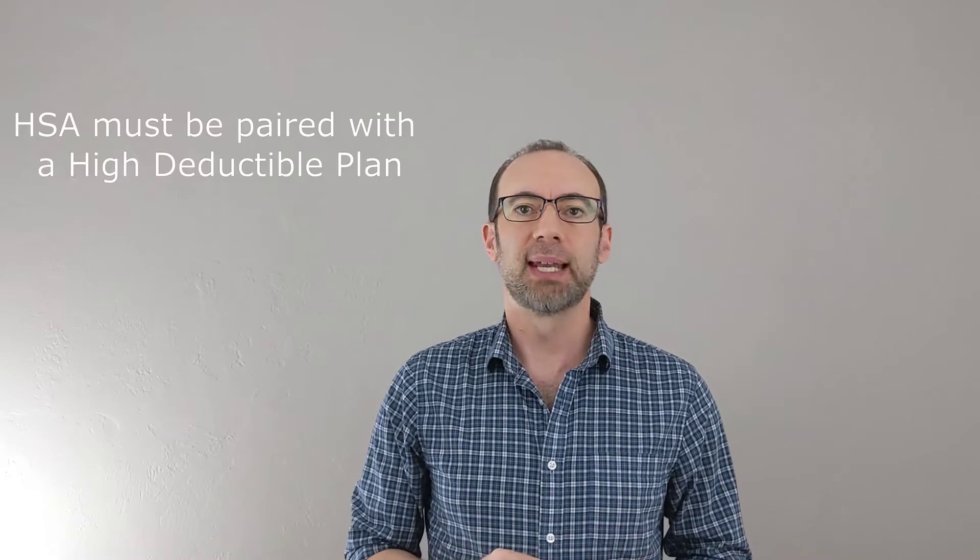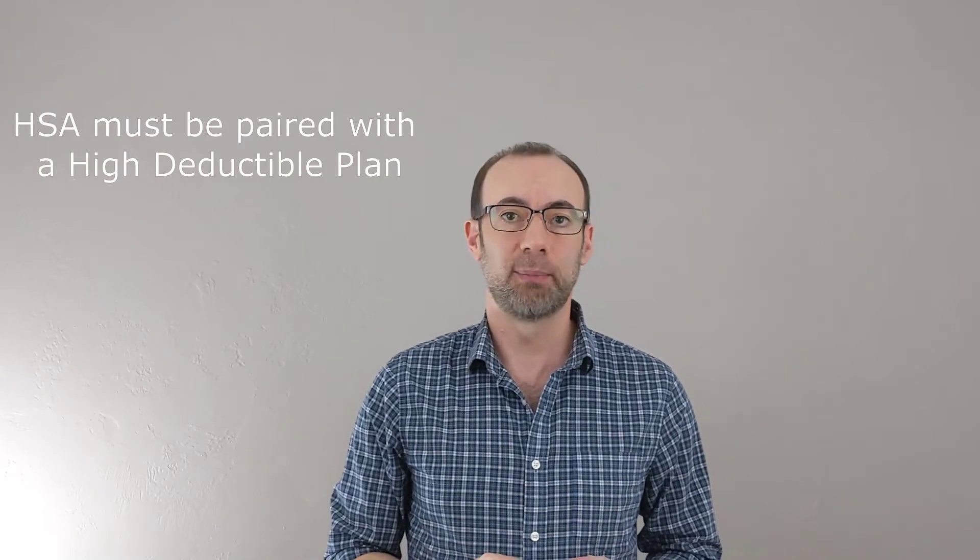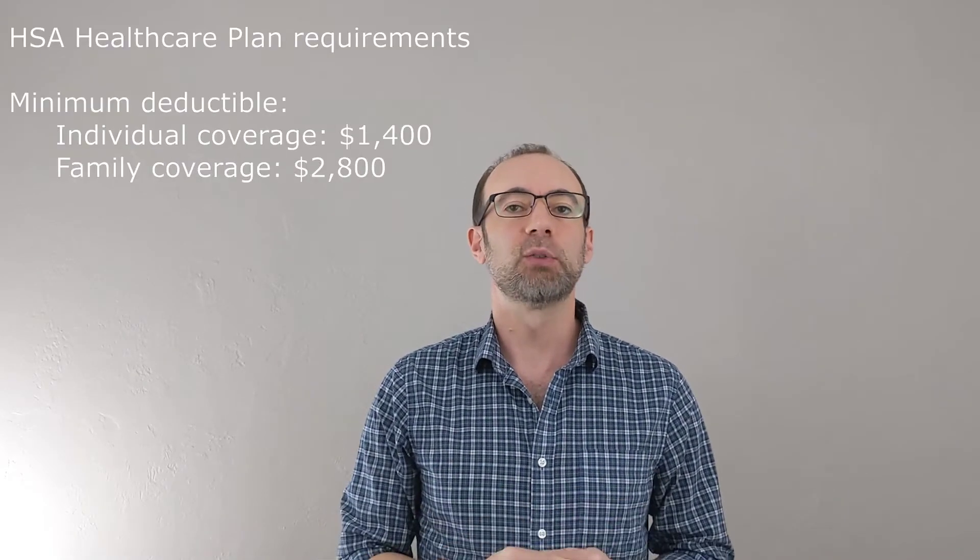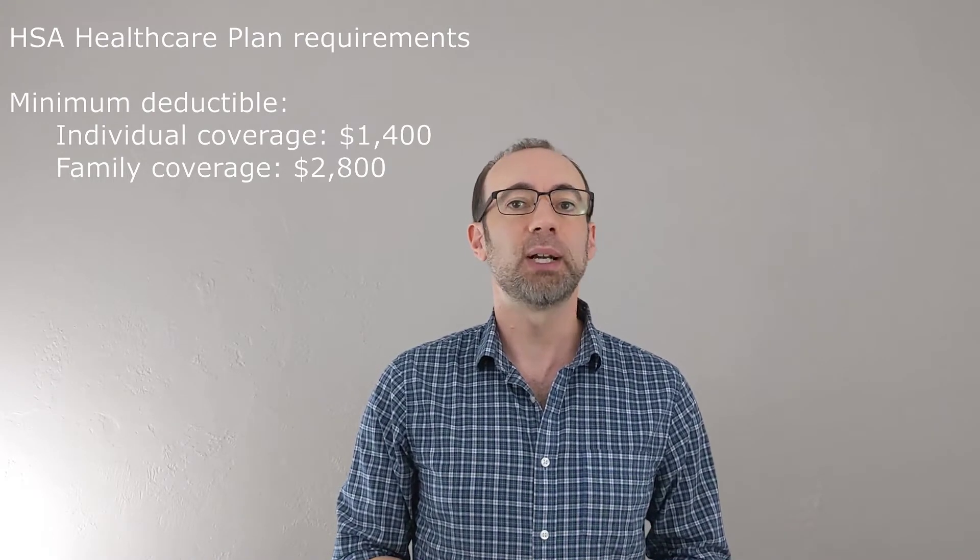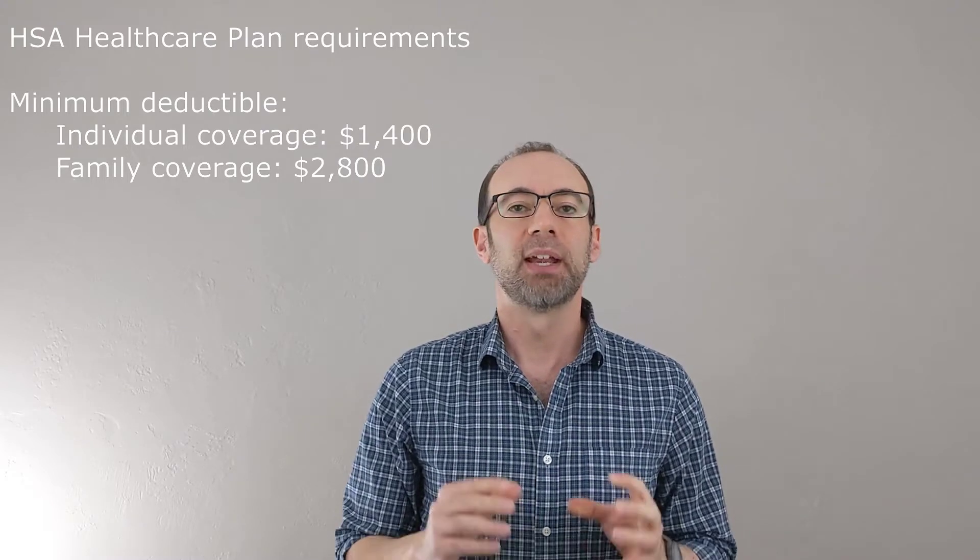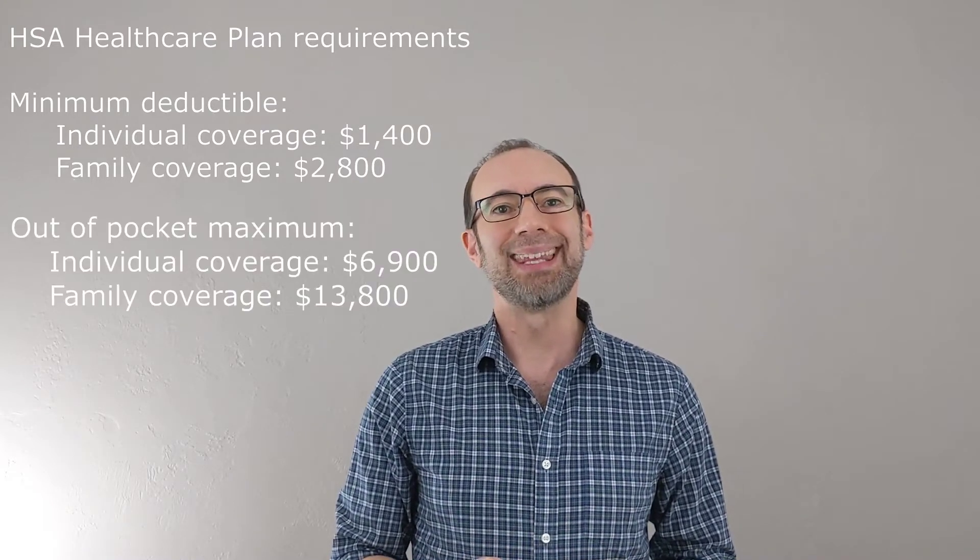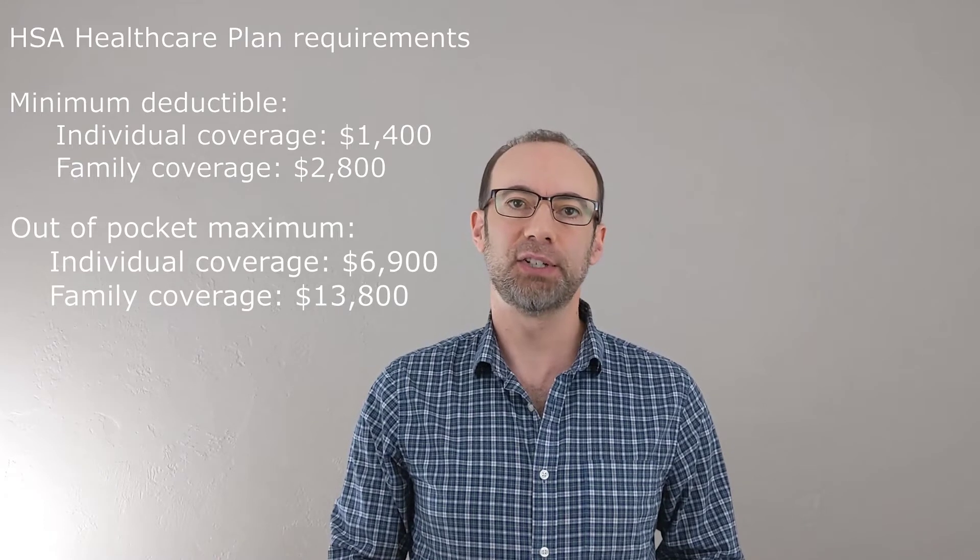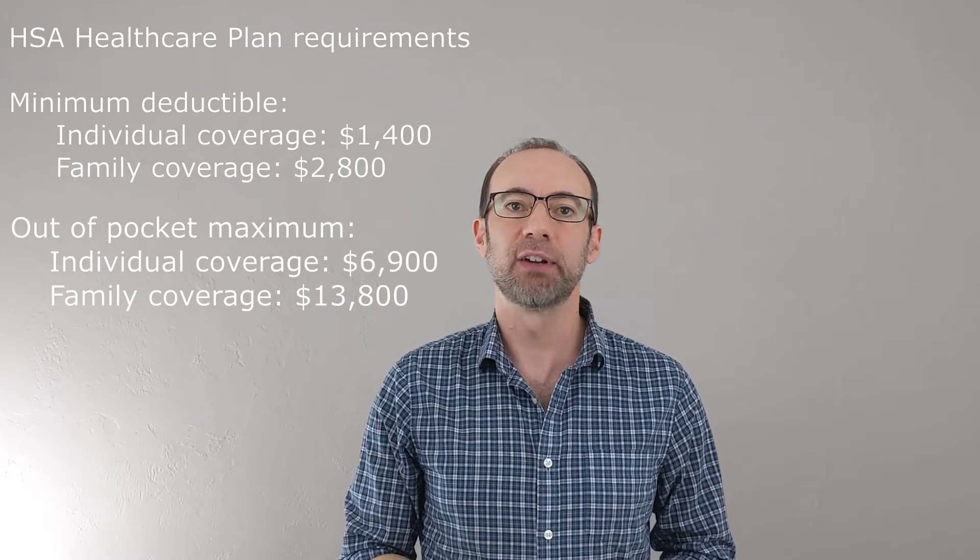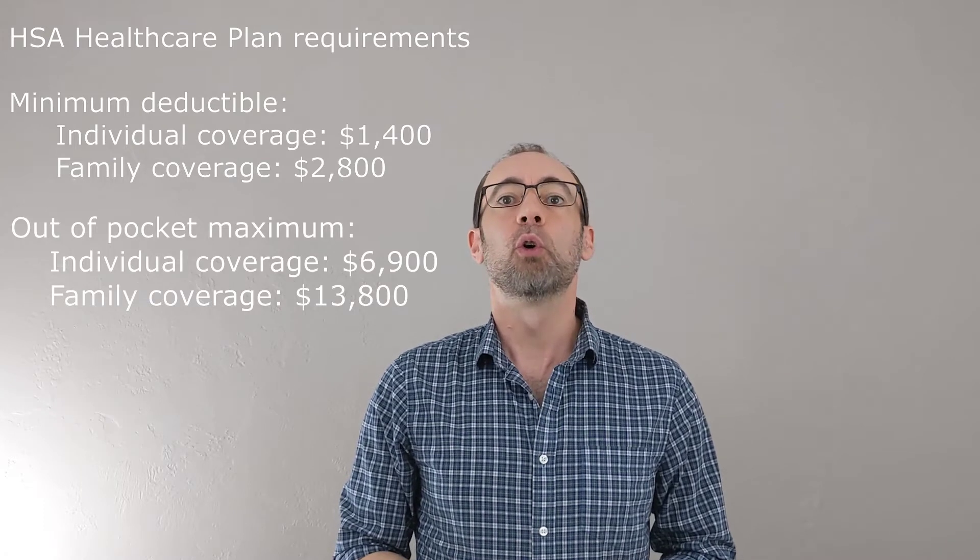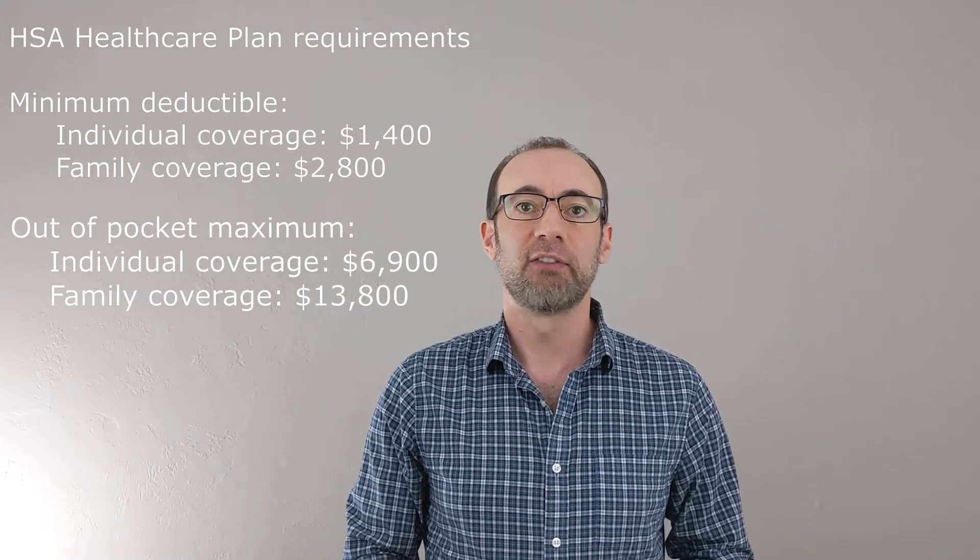Now if you're considering signing up for an HSA, you also have to sign up for a qualifying high-deductible healthcare plan to be eligible. For 2020, the minimum deductible for a high-deductible healthcare plan is $1,400 for an individual and $2,800 for a family. Another criterion to be eligible is that the out-of-pocket maximum for an HSA-qualified health plan cannot be more than $6,900 for individual coverage or $13,800 for family coverage.